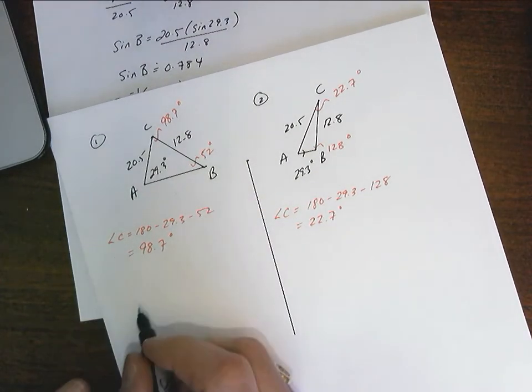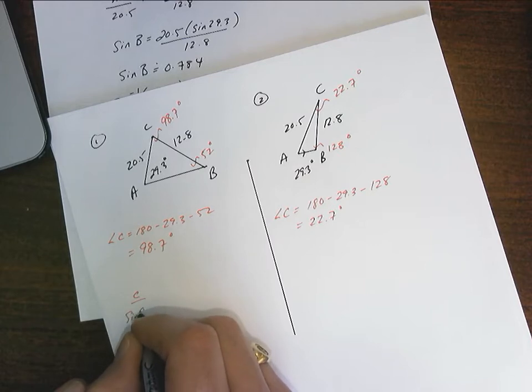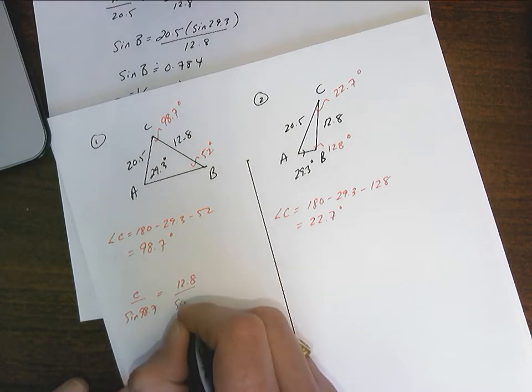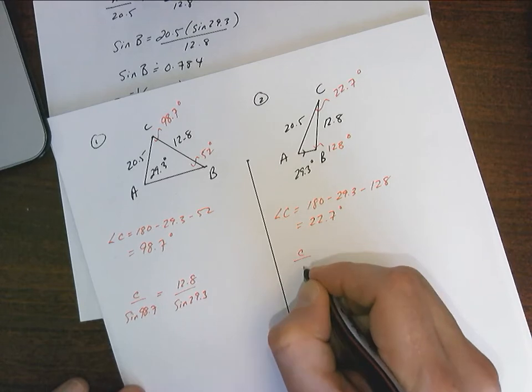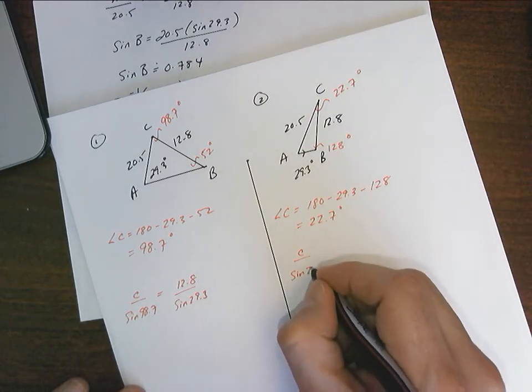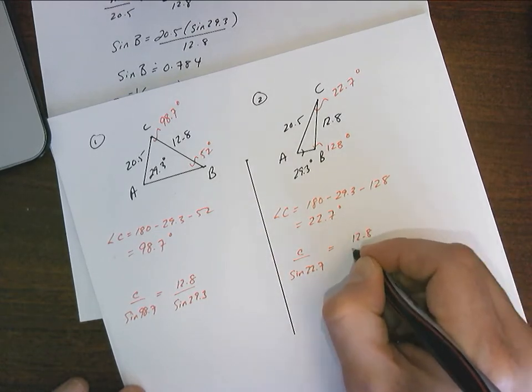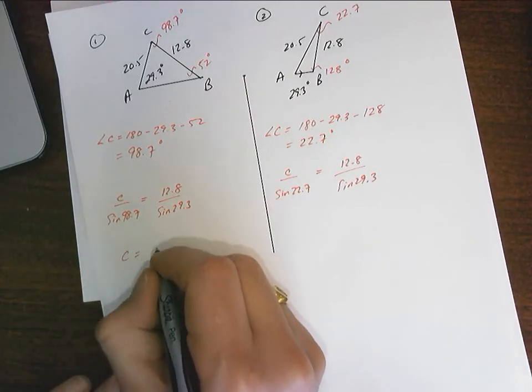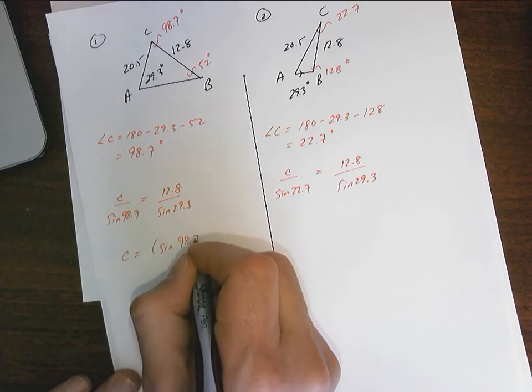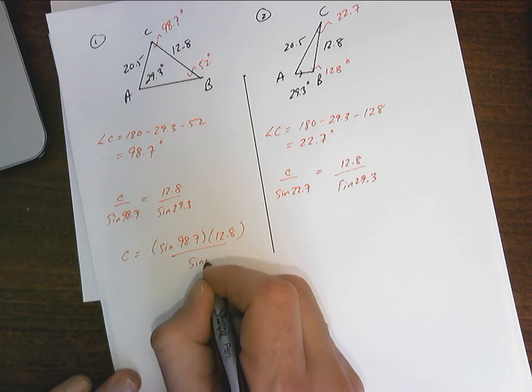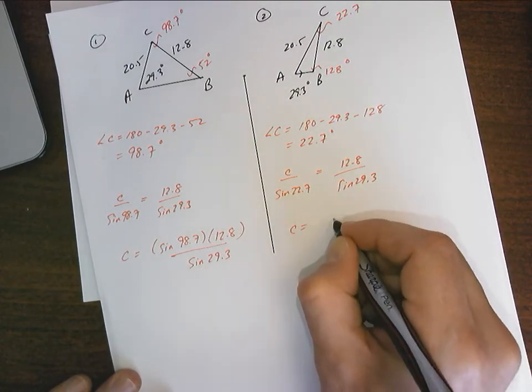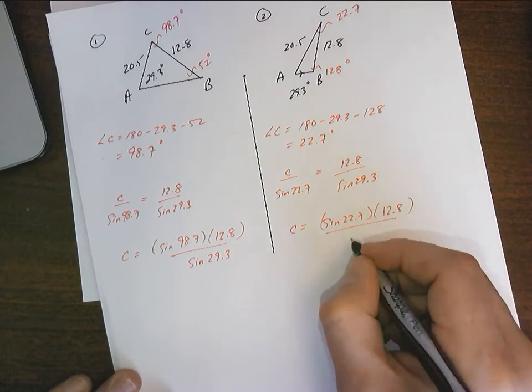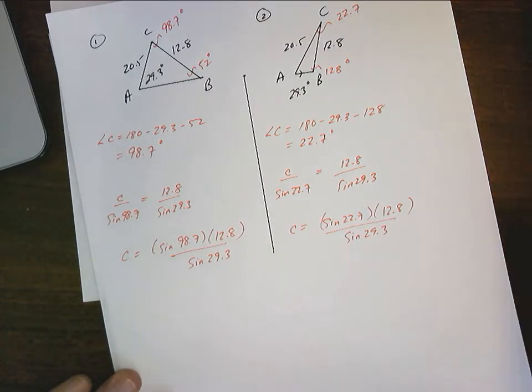The side length C is going to change in both of them. So C over sine of 98.7, I like to use the one that was given, equals 12.8 over sine 29.3. This one will be C over sine of 22.7 equals 12.8 over sine of 29.3. That doesn't change for both of them. So finally, C is going to equal sine of 98.7 times 12.8 over sine 29.3. C is going to equal sine of 22.7 times 12.8 over sine of 29.3.